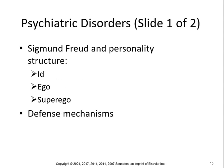Sigmund Freud described personality structure with the id, the ego, and the superego. The ego is the central coordinating branch of the personality — it's the mediator between the id and the outside world. You don't have to go too deeply into it.